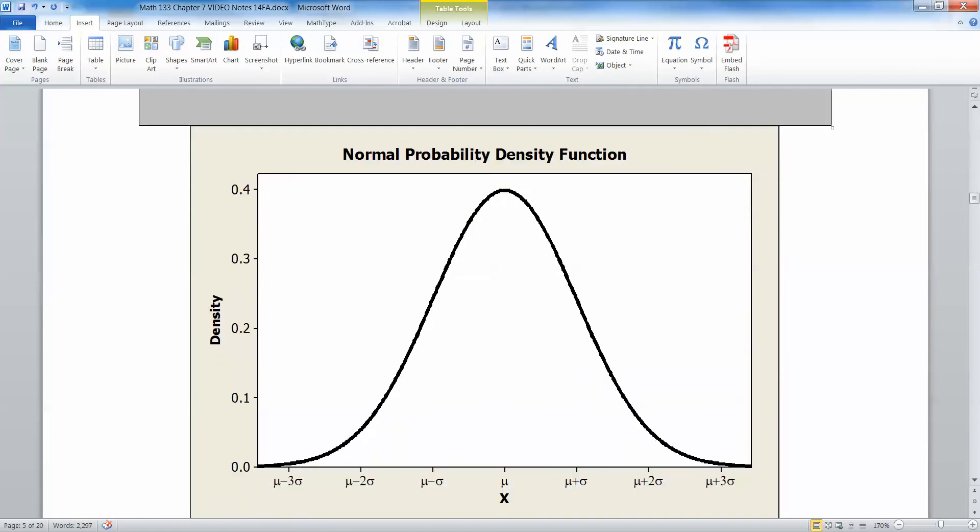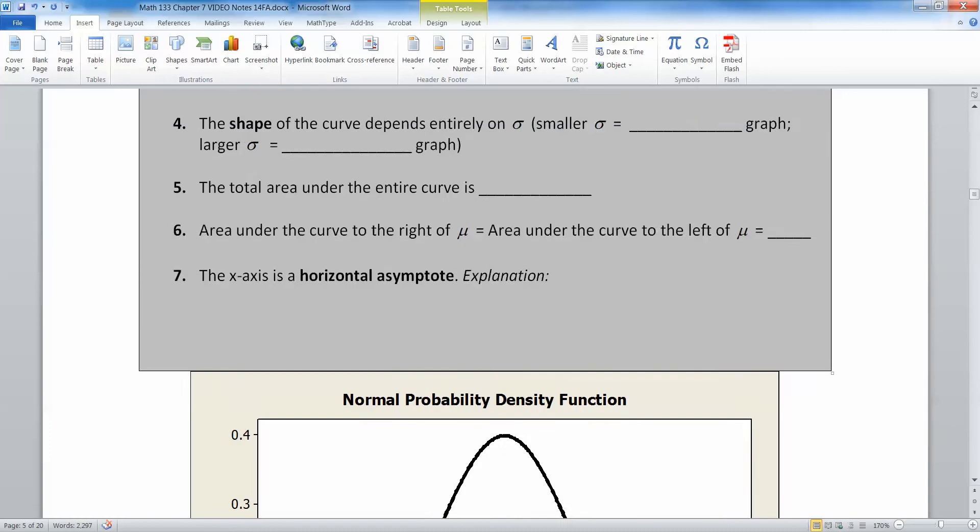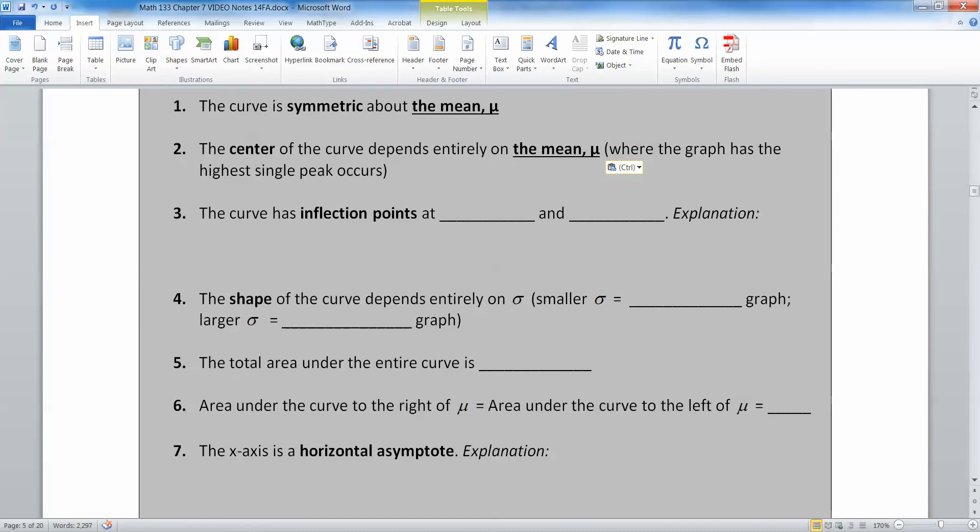So the inflection points happen, they're at mu minus sigma and mu plus sigma. And then inflection points, remember that is where the graph is the steepest, where the graph changes from being concave down to concave up. So let me type all that up. One second.